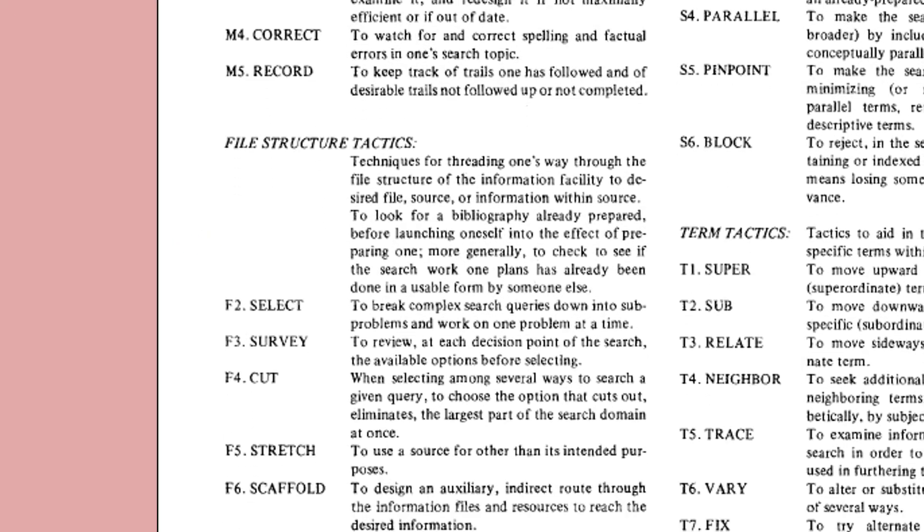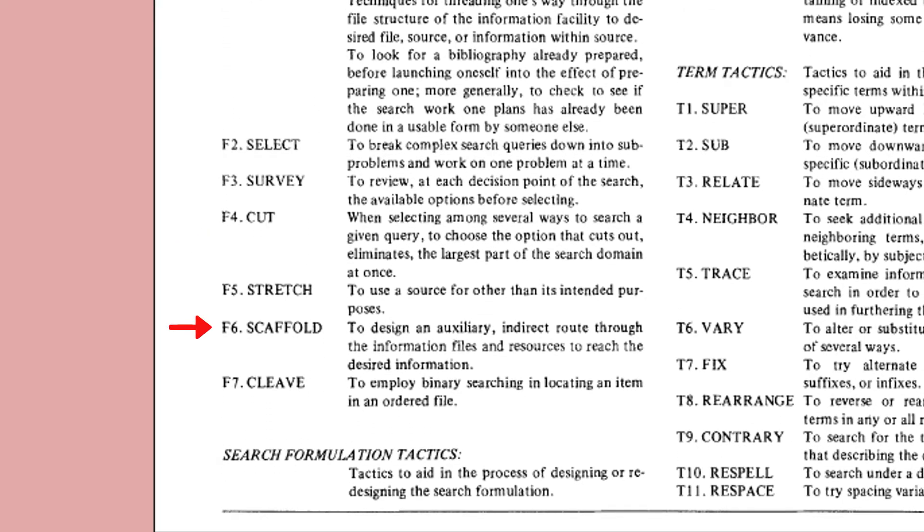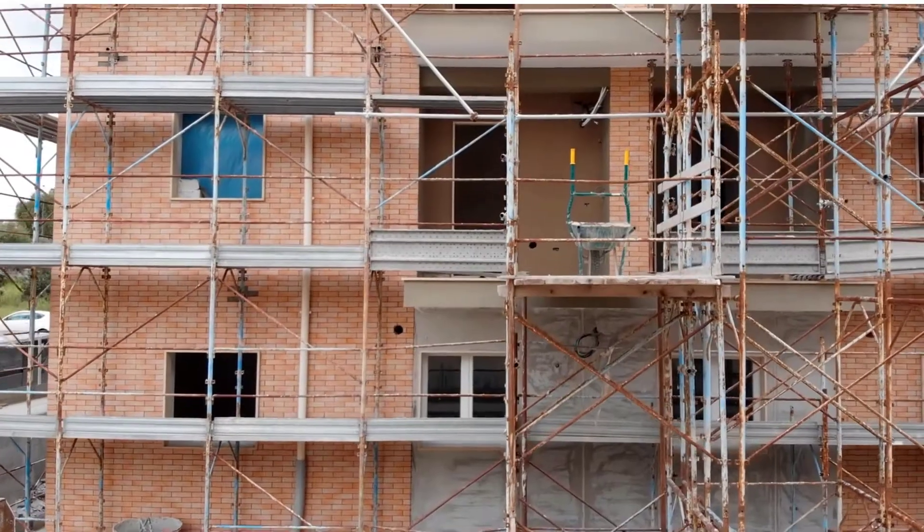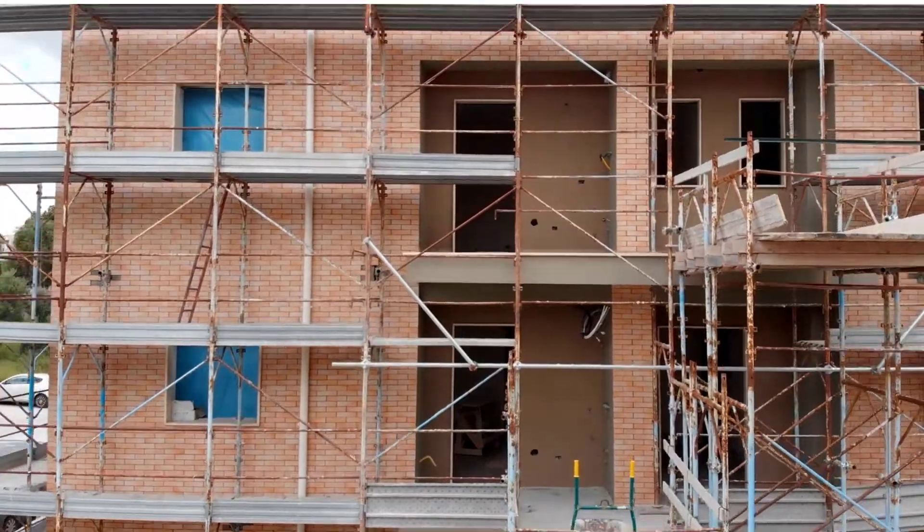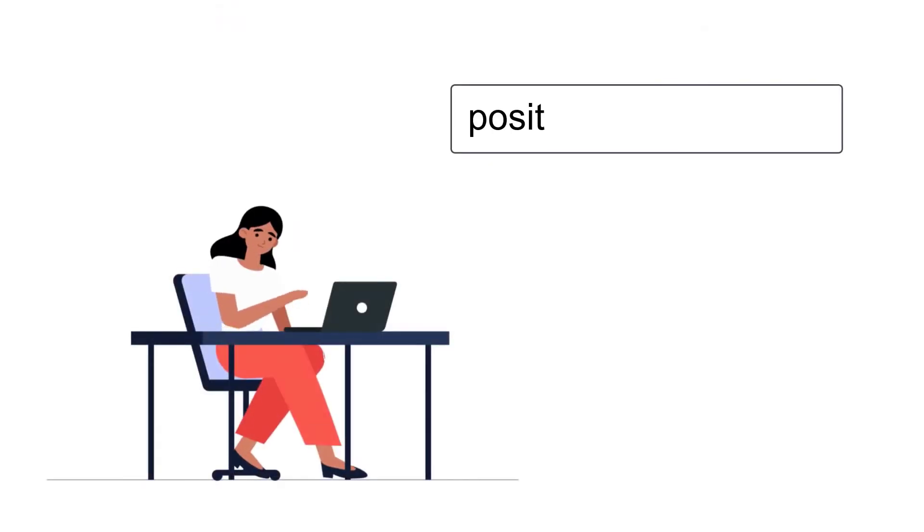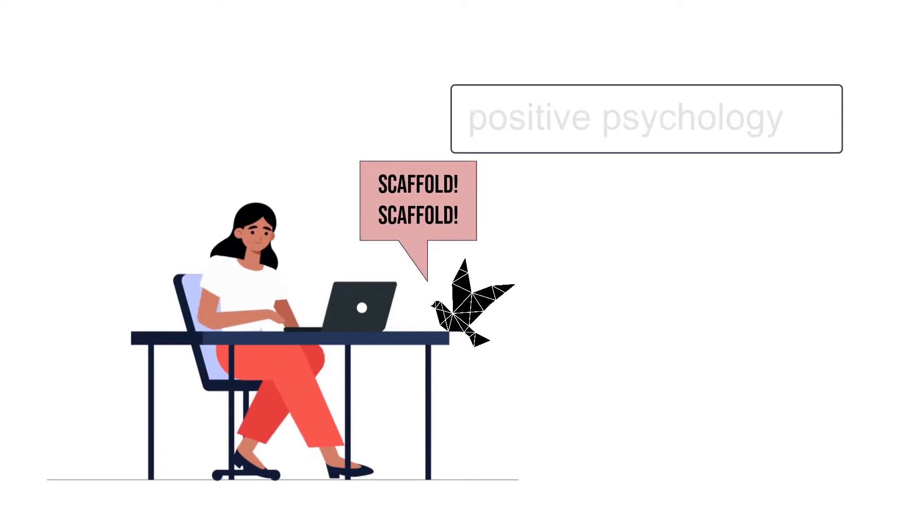You might SCAFFOLD, which means to take an indirect route during a search. This is effective when your topic contains common words. For instance, when searching for information on positive psychology, you might instead search on the name of its founder, Martin Seligman.